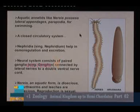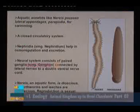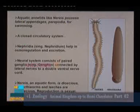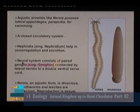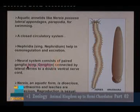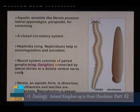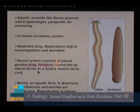Annelids possess a closed circulatory system, where body fluid flows through closed channels like arteries, veins and capillaries. Regarding the nervous system, it consists of paired ganglia on each segment, connected by lateral nerves to a double ventral nerve cord.